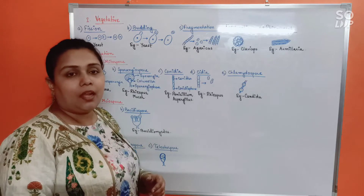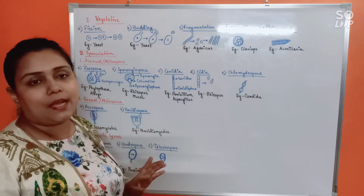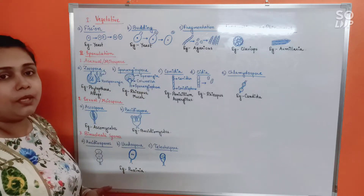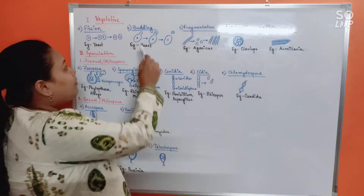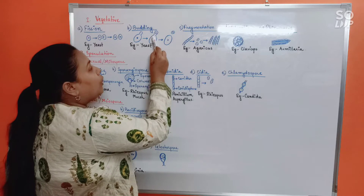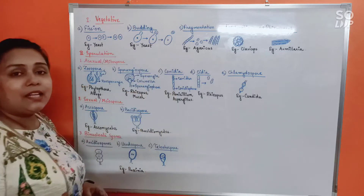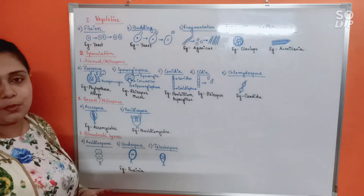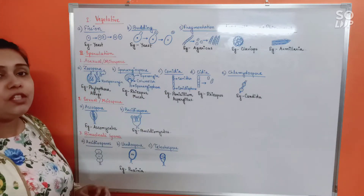Next is budding. Budding is also a mode of reproduction which will only occur in unicellular fungi — common example again is yeast. In budding, the parental cell during favorable conditions will bear a minute projection known as the bud. Eventually the bud undergoes karyokinesis, meaning the parental nucleus divides and one copy of the nucleus enters the bud. The bud then detaches from the parental cell and starts living as a new individual offspring.